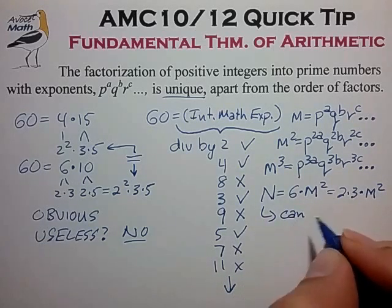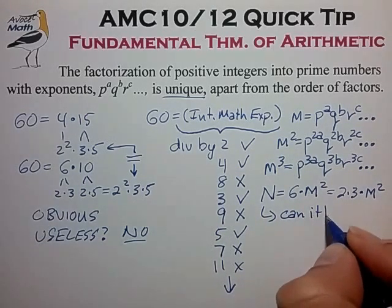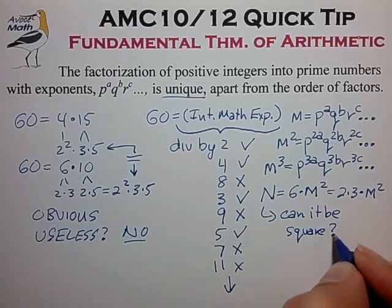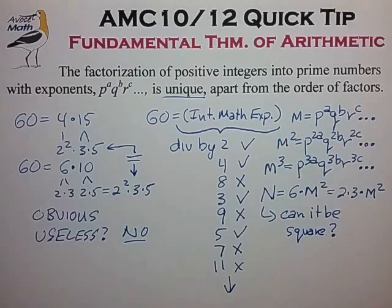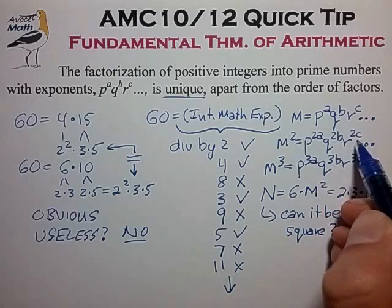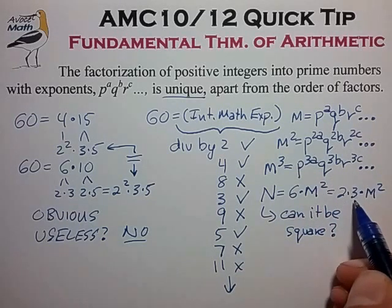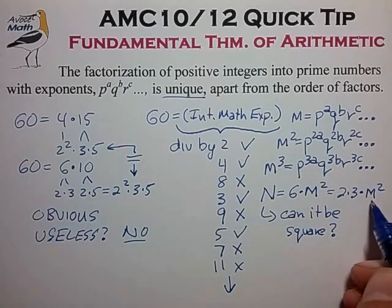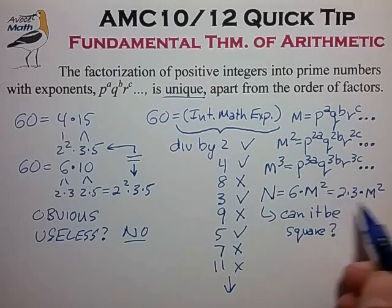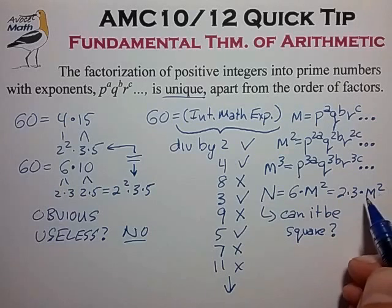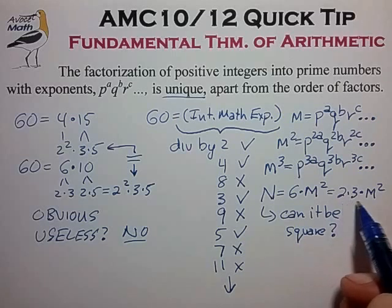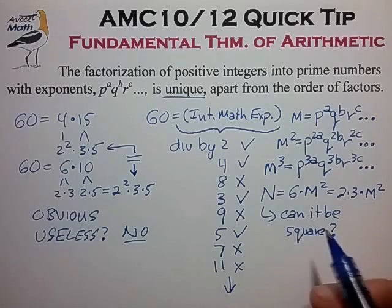So can n be a perfect square? Well let's take a look. We know that m squared has all even exponents and we know that we have some odd exponents out in front of it. So no matter what's actually in m, when we finally take these odd exponents and bring them inside along with m squared, we know that we're going to have some prime factors that will have odd exponents. And because they have odd exponents, we know that it cannot be a square.